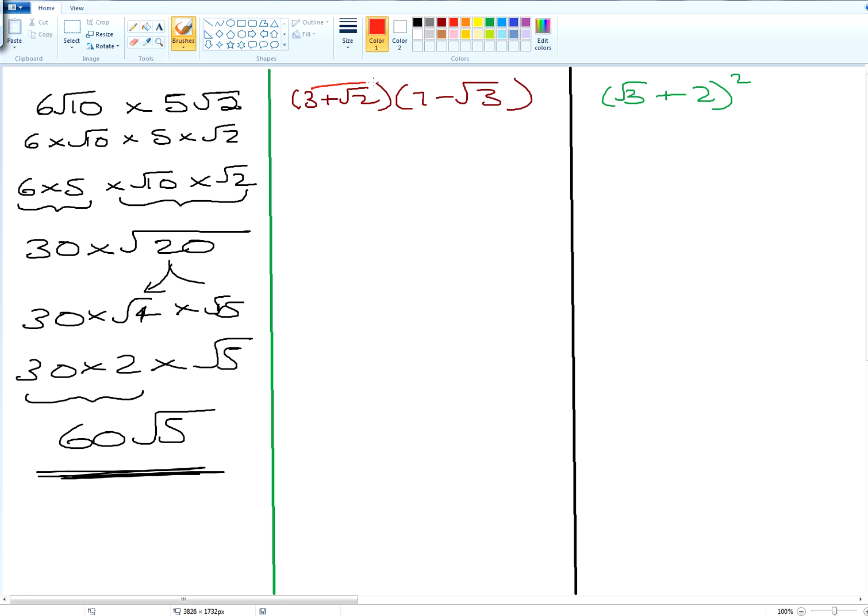Let's have a look at the next question. We need to multiply out these double brackets. So here's the first set of multiplication, followed by the second set of multiplication. So we have first of all 3 times by 7, then 3 times by minus root 3. We have plus root 2 times by 7, and then plus root 2 times by minus root 3.